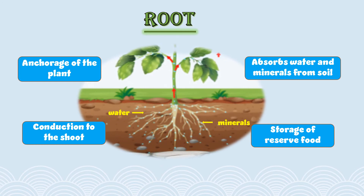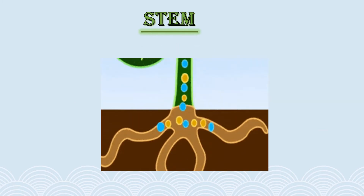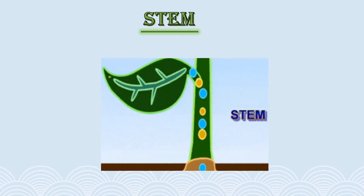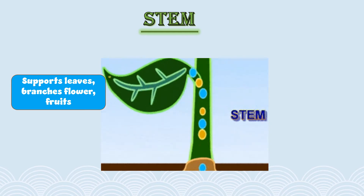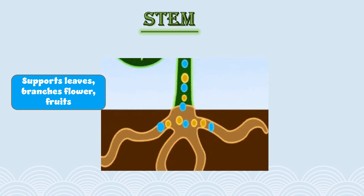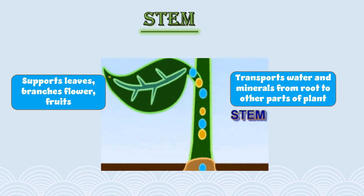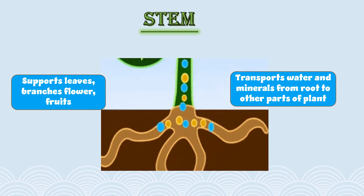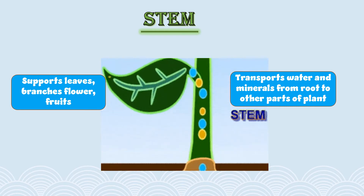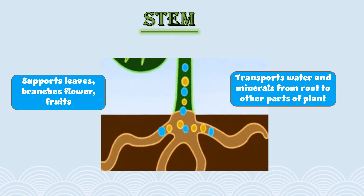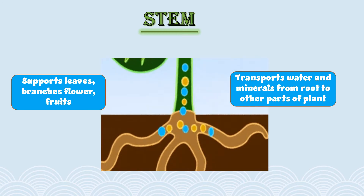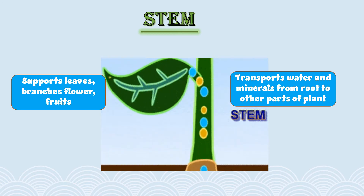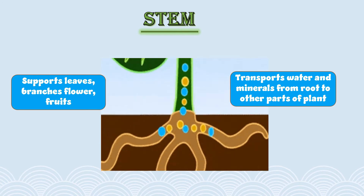Let's take a look at the stem of a plant. Stem supports the leaves, branches, flower buds, and fruits of a plant, so it's kind of a backbone of a plant. As we saw earlier, root absorbs water and minerals from the soil — but how are they transported to other parts of the plant? That is the work of the stem. Stem transports water and minerals from root to other parts of a plant.